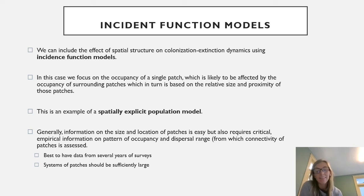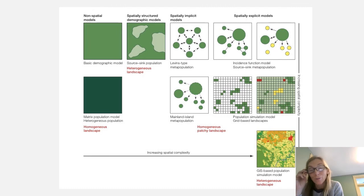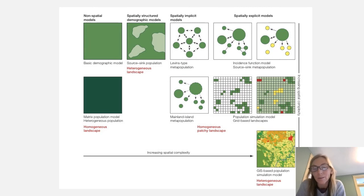This figure gives a snapshot of the different models discussed in this chapter — from non-spatial models that are basic demographic descriptions assuming a homogeneous landscape, to the more complex spatially explicit models discussed in the latter part of the book.